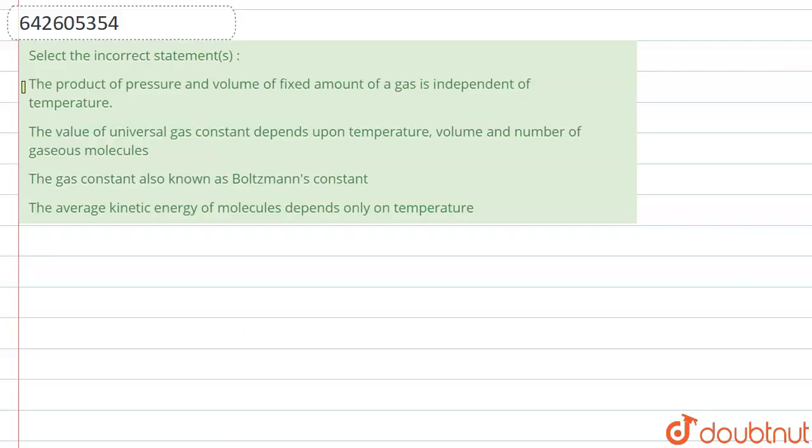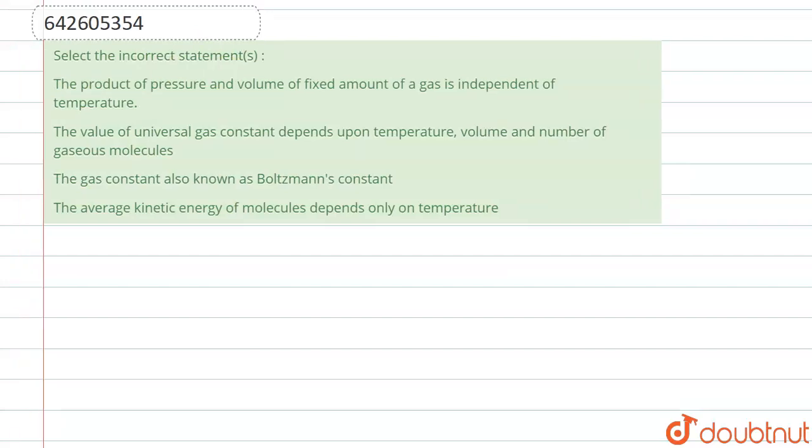Hello everyone, so the question is saying select the incorrect statement. The first statement right here we have is the product of pressure and volume of a fixed amount of gas is independent of temperature.